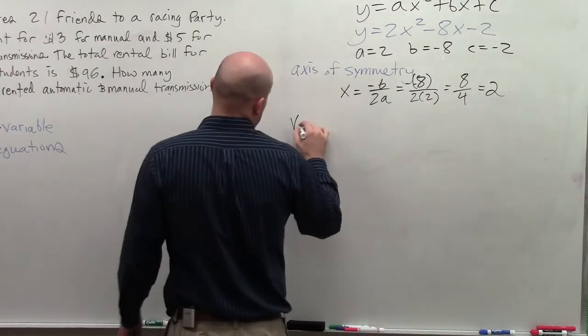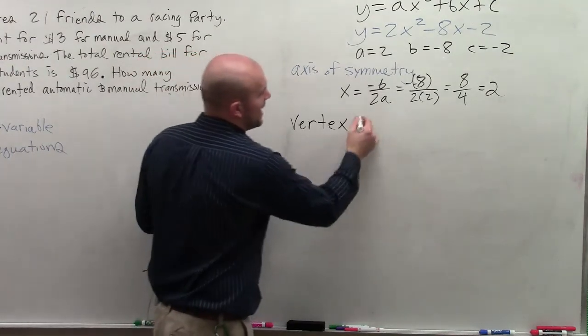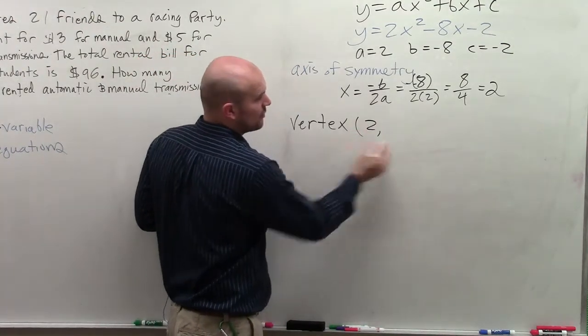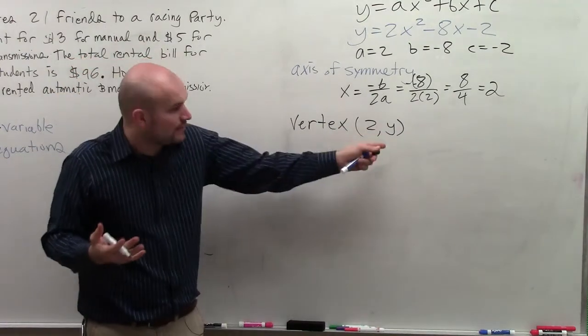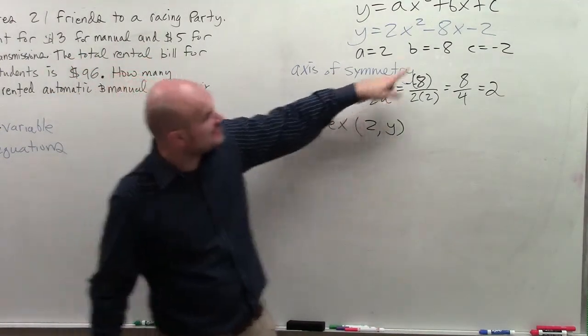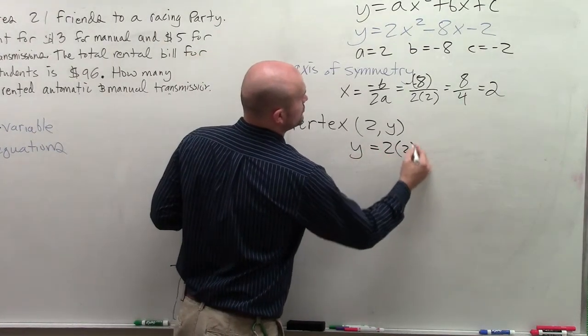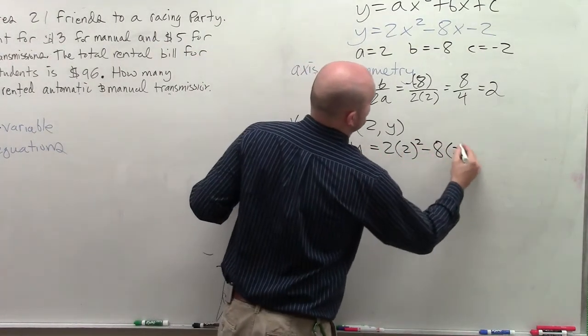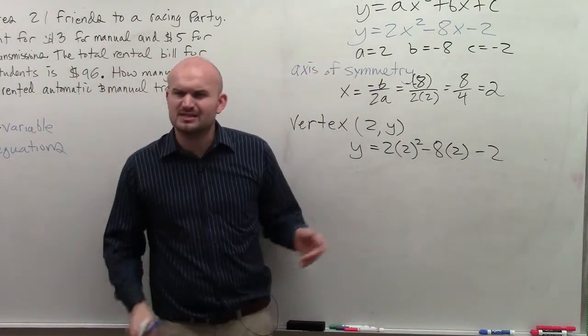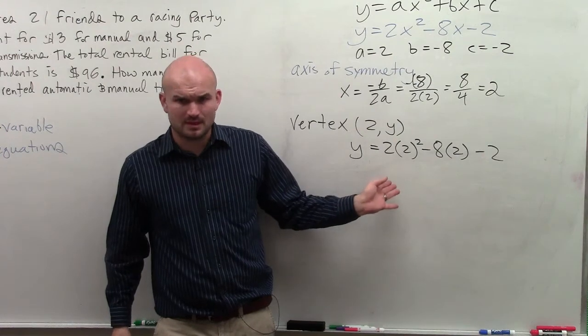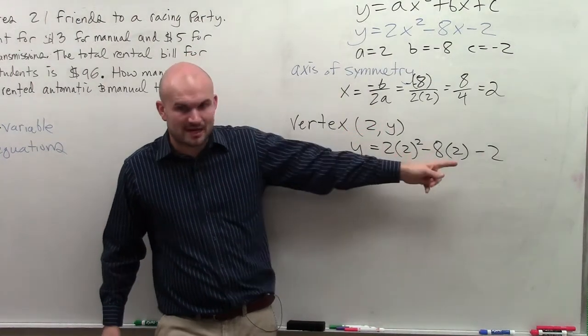Now, to find the vertex, remember, I have 2 as my x coordinate, but I don't know my y coordinate. So to find my y coordinate, I'm going to plug 2 in for x into that equation. So I have y equals 2 times 2 squared minus 8 times 2 minus 2. A lot of 2's. But do you guys see what I did? I took the x coordinate of my vertex, and I plugged it into my equation to find y.